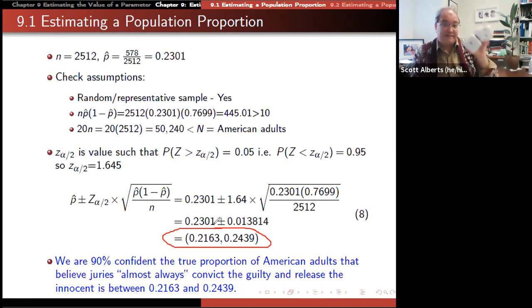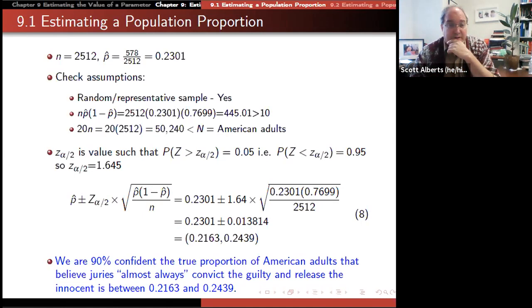And that gives us our true confidence interval, which again isn't a guarantee that that's where the real value is. But we have 90% confidence that the proportion of American adults who believe juries almost always convict the guilty and release innocent is between 21 and 24%. So that's how we build a confidence interval using data that we have. This is exactly what they're doing when they say we asked 1000 people whether they got to vote for Donald Trump or Joe Biden. This is exactly the same calculation that they're doing.